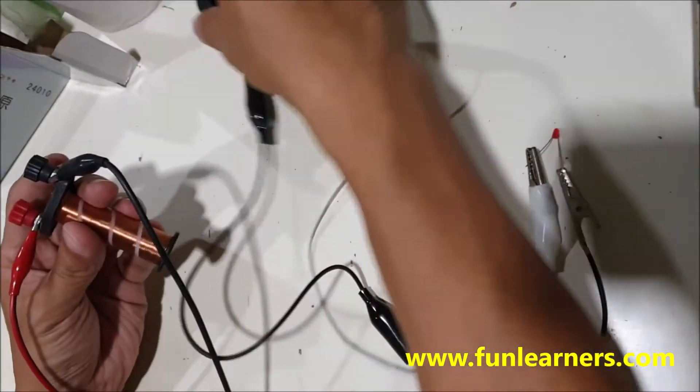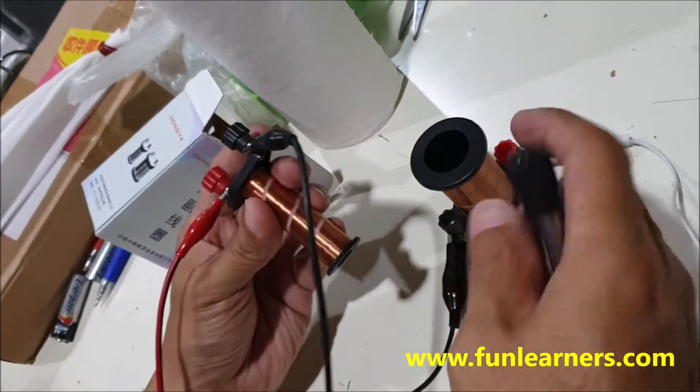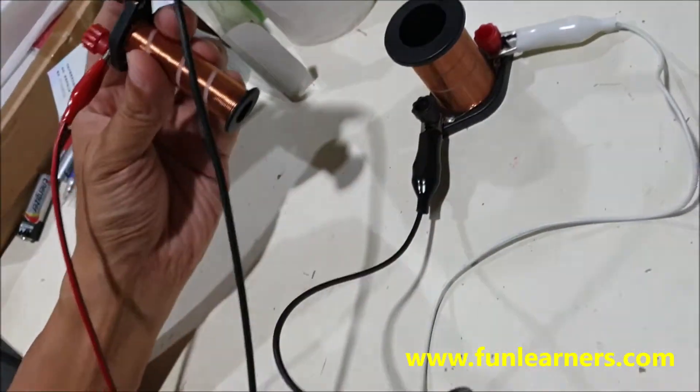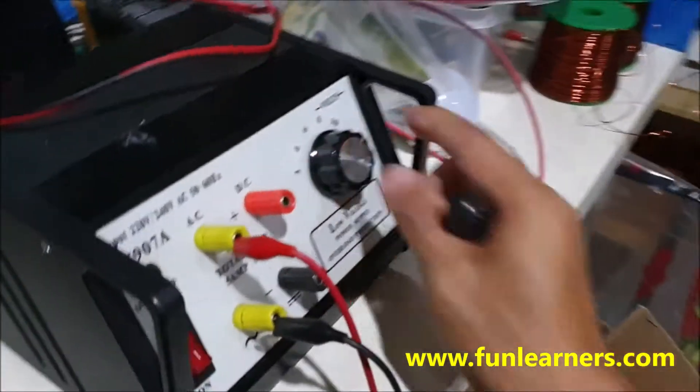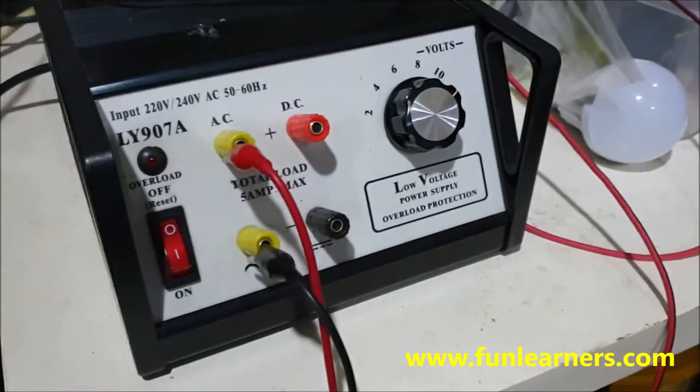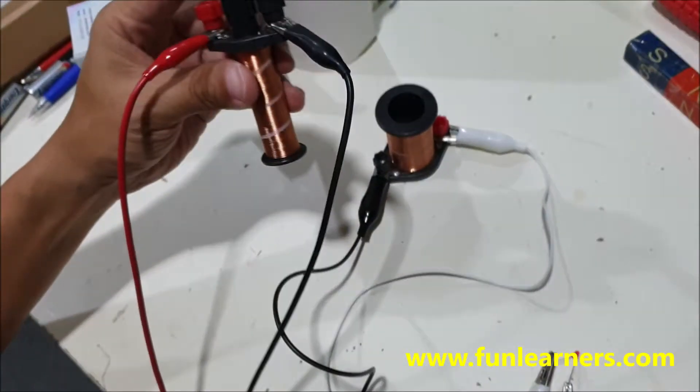Now what we have here is a secondary coil and primary coil. The primary coil is connected to about 10 volt AC. I put this iron core inside to increase the magnetic field strength.